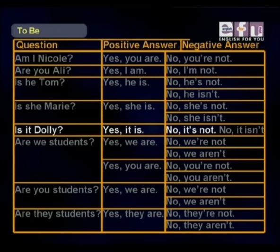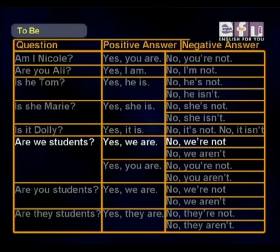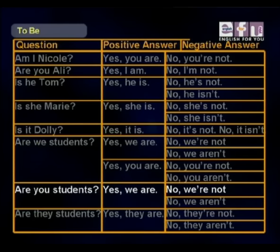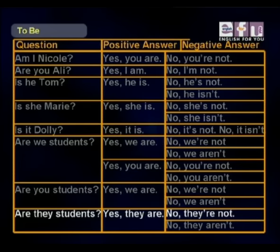Are we students? Yes, we are. No, we're not. No, we aren't. Are you students? Yes, you are. No, you're not. No, you aren't. Are you students? Yes, we are. No, we're not. No, we aren't. Are they students? Yes, they are. No, they're not. No, they aren't. Now let's practice. Anna, ask Alberto a question. Alberto, are you a student? Yes, I am. Alberto, ask Silvia a question. Silvia, are you a volleyball player? No, I'm not. I'm a tennis player. Silvia, ask Anna a question. Anna, are we happy? Yes, we are. Wonderful. I'm glad you're all so happy.